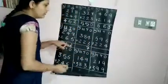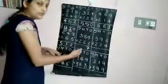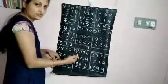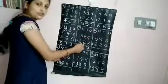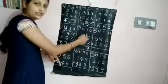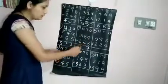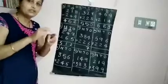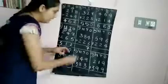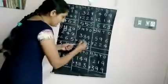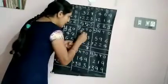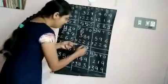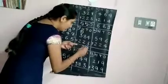Next, tens column. 8 plus 2. 8 in your mind, 2 in your hand. 8 after: 9, 10. 8 plus 2 is 10. So, 1 carry to the hundreds column.